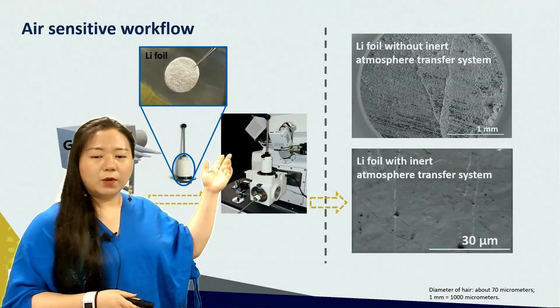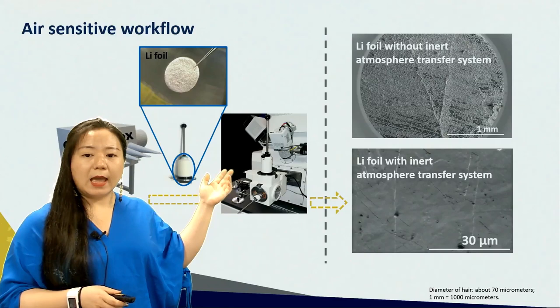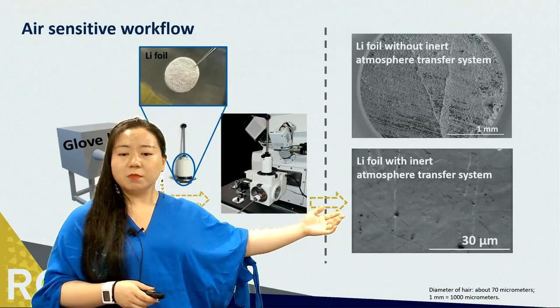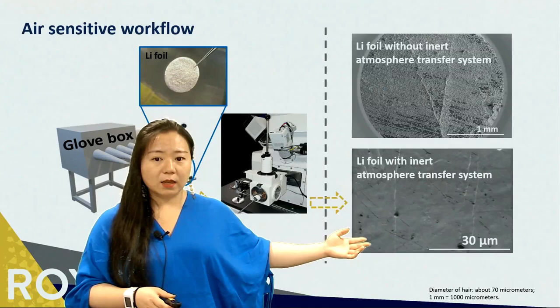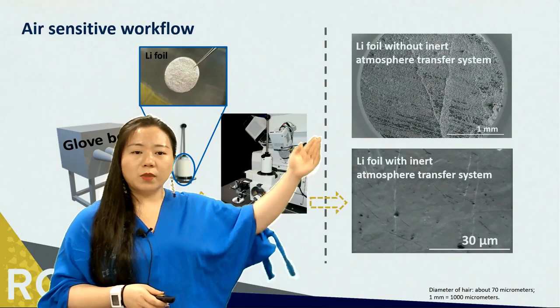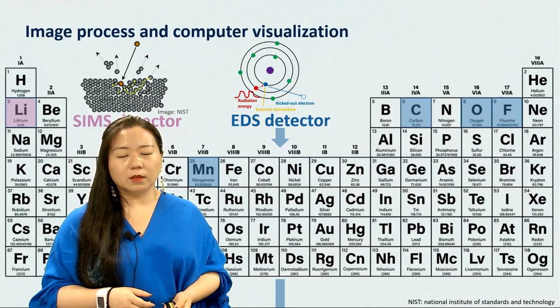Here we also use an air-sensitive workflow, which is able to protect the electrodes since they are air-sensitive and moisture-sensitive. The right side of this slide shows a comparison of lithium foils with and without such a system. We can see that the lithium foil with this inert atmosphere transfer system is quite clean, almost with no oxidation on the surface. However, the lithium foil without such a system oxidizes very fast.